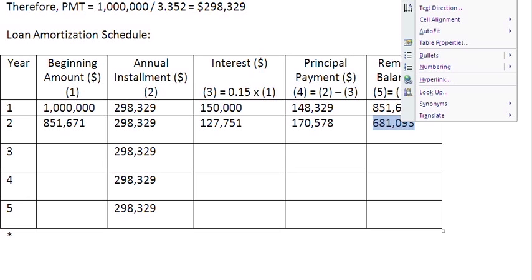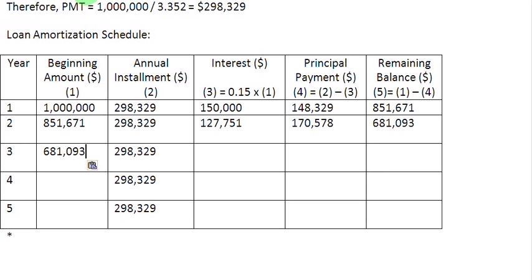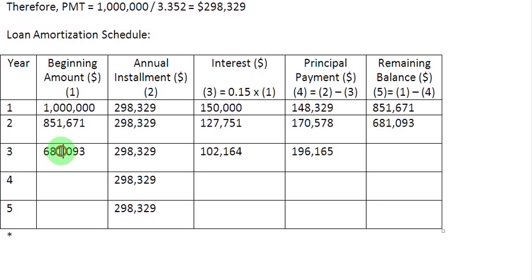681,093 is the ending balance for year 2 and therefore also the beginning balance for year 3. The interest for year 3 is 15% of 681,093, which equals 102,164. The principal repayment is 298,329 minus 102,164, which equals 196,165. The remaining balance is 681,093 minus 196,165, which gives us 484,928. This same number becomes our beginning balance for year 4.